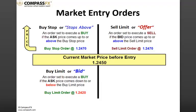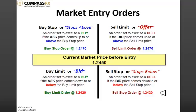On the flip side, stops below is referred to as a sell stop order. In this case, we're looking to short the market as it breaks a lower level. We have an order set to sell if the bid price comes down to or below the sell stop price — in this case $124.20. So we come down to $124.20, the trade is triggered, and we're looking to make a gain in the trade if it continues running down.